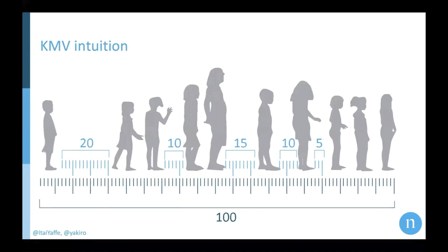To give you some intuition for how KMV works behind the scenes: let's say that we have people standing in a line. We know the line length — in this case it's going to be 100 meters — and we want to know the number of people in the line.